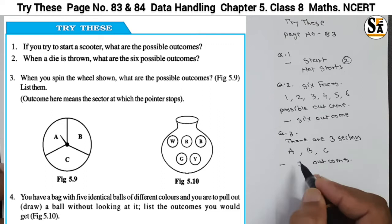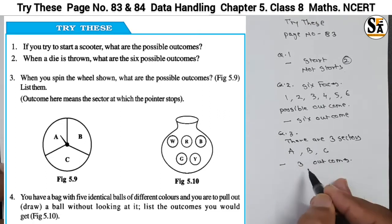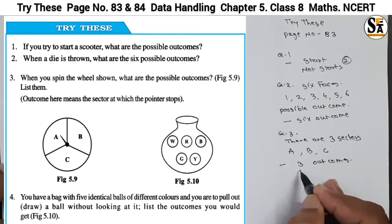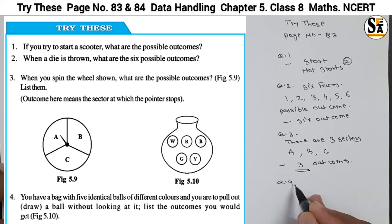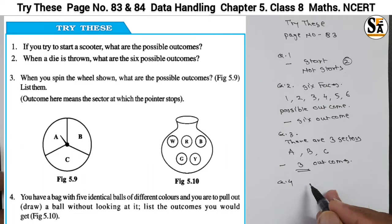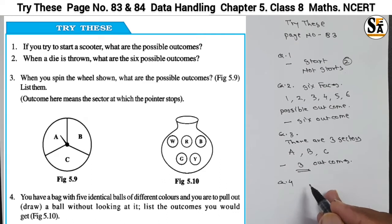The pointer may stop on A, or B, or C, so there are three possible outcomes. Now see question number four and figure 5.10. You have a bag with five identical balls of different colors and you are to draw a ball without looking at it. List the outcomes you will get.